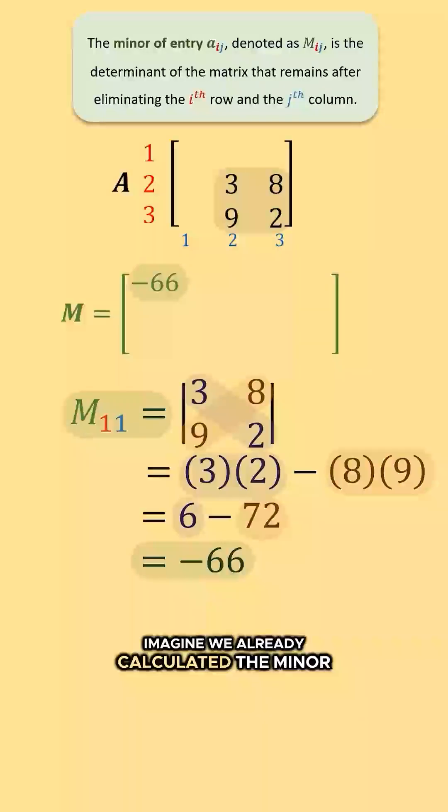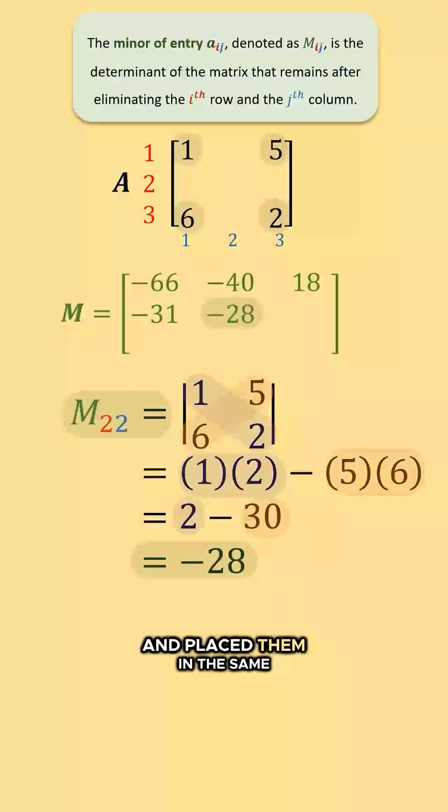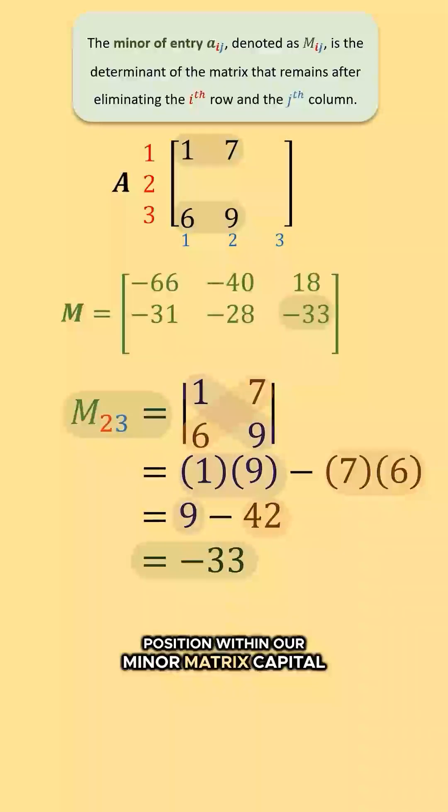Imagine we already calculated the minor for every position in our 3x3 matrix A and placed them in the same position within our minor matrix capital M.